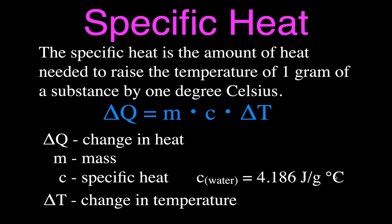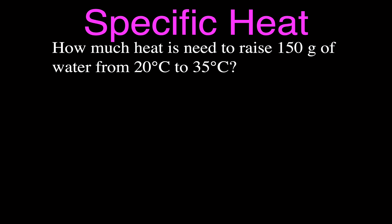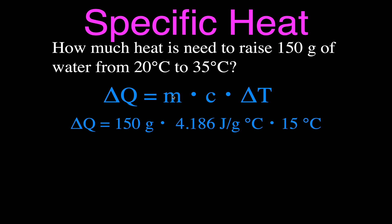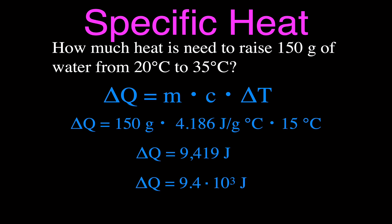Let's do a quick calculation. How much heat is needed to raise 150 grams of water from 20°C to 35°C? Using ΔQ = mcΔT: mass is 150 g, specific heat is 4.186 J/g·°C, and the temperature change is 15°C. Multiplying those together gives a change in heat of 9,419 joules, which we can also write as 9.4 × 10³ joules.